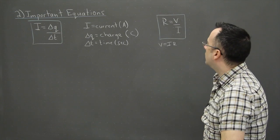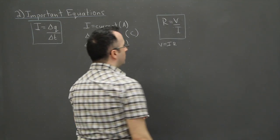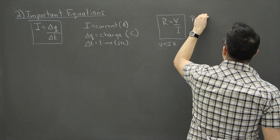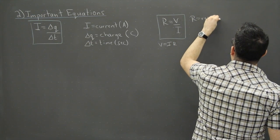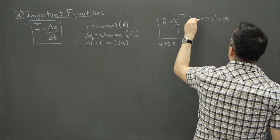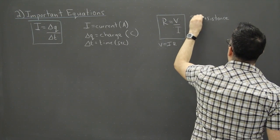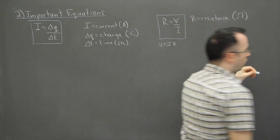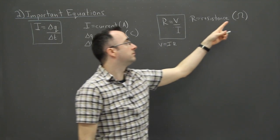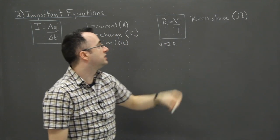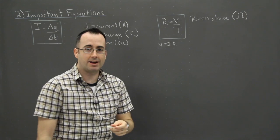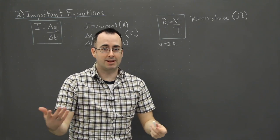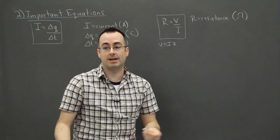So let's define what the different quantities are. R is resistance — in our analogy, that was the height of the chairs. Resistance is measured in a unit called the ohm, denoted by the Greek letter omega (Ω). They chose omega because it sounds like 'ohm' — kind of nice.